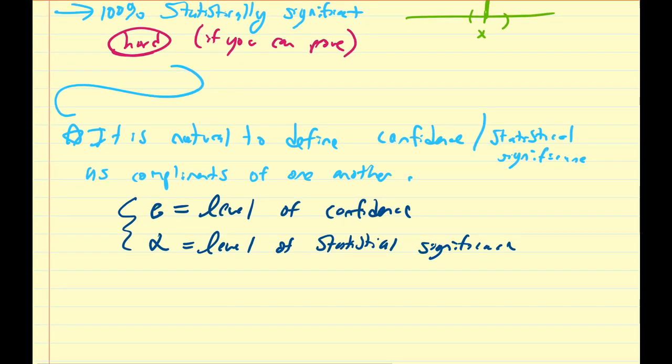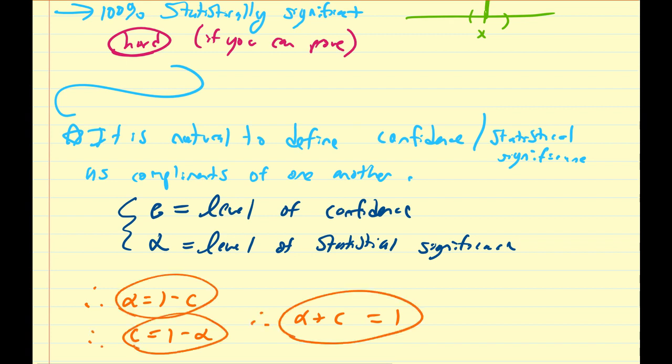And we're going to define α to be equal to our level of statistical significance. So if they are complements, then that means we have some equations associated with it. Namely, α is going to be 1 minus c, c is going to be 1 minus α, and α plus c equals 1. So these three statements are going to be true.